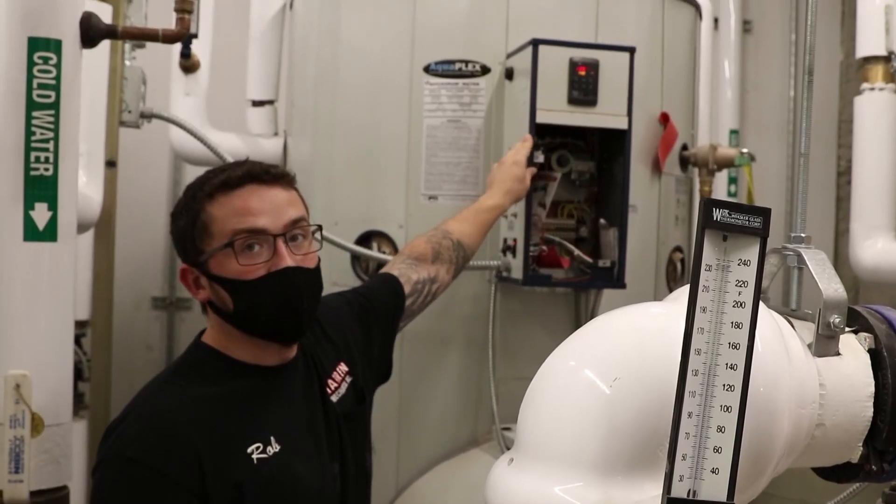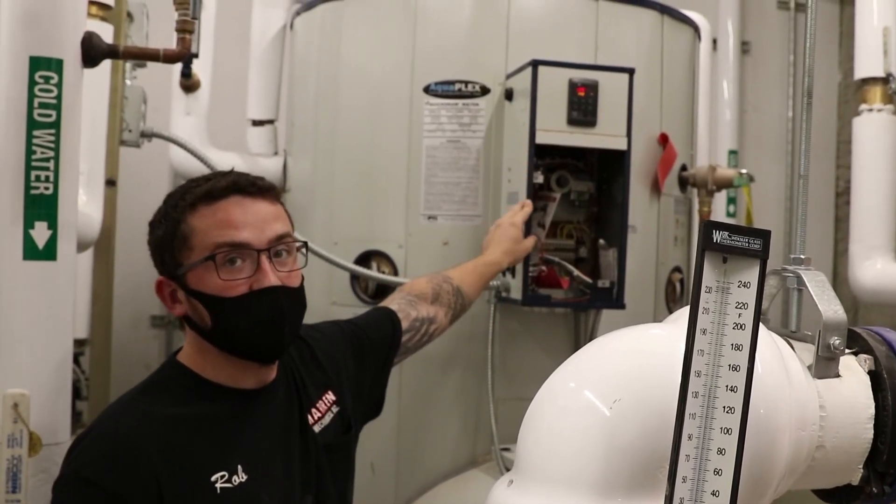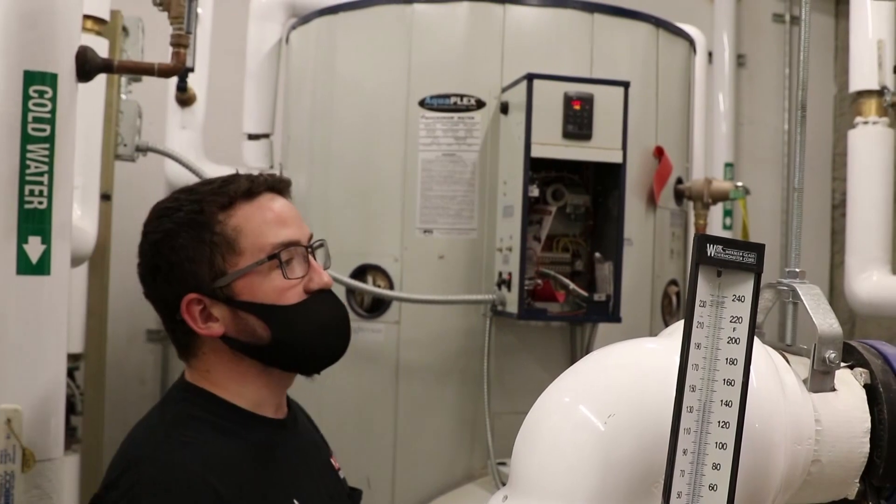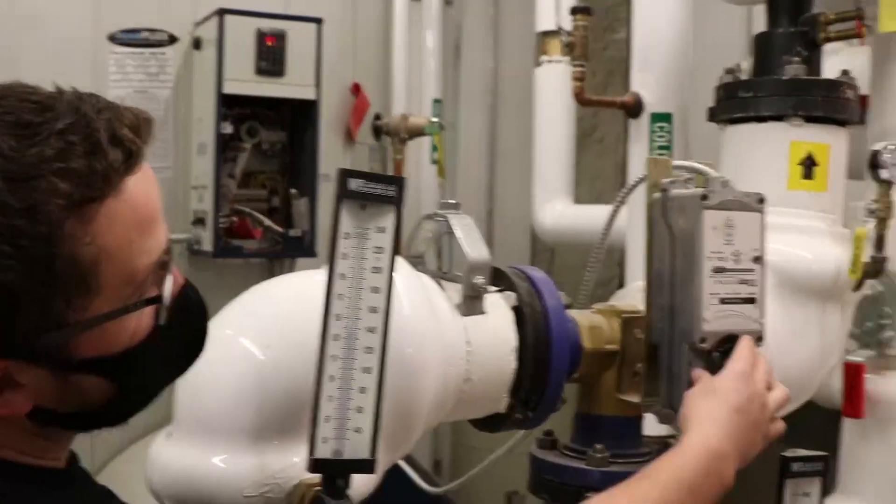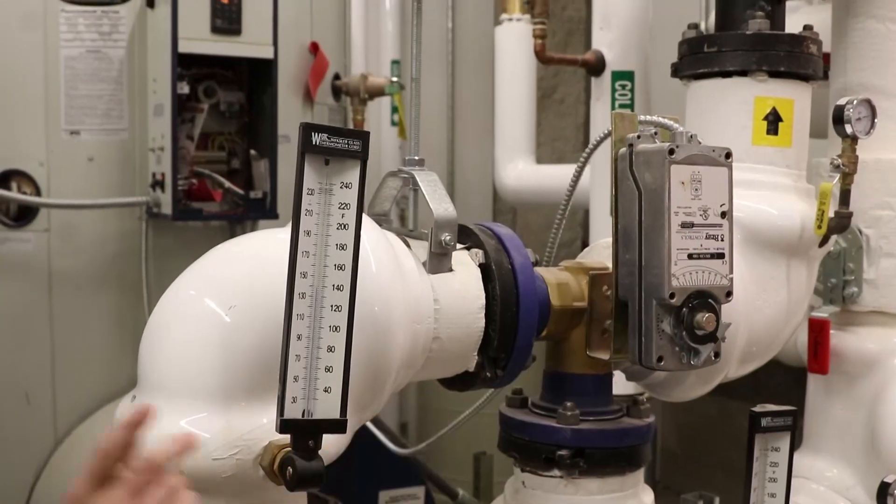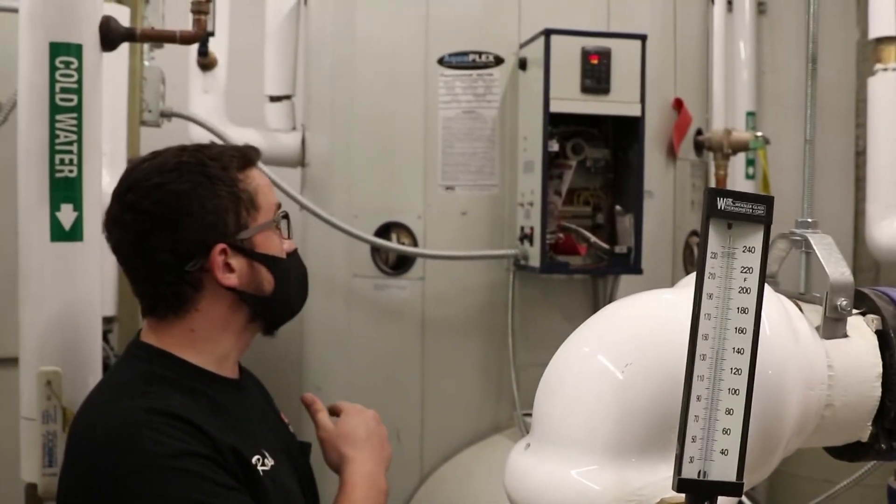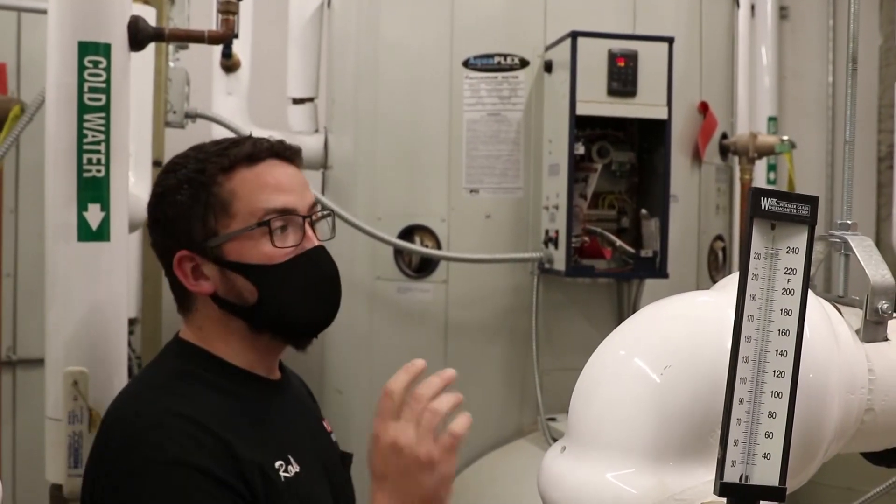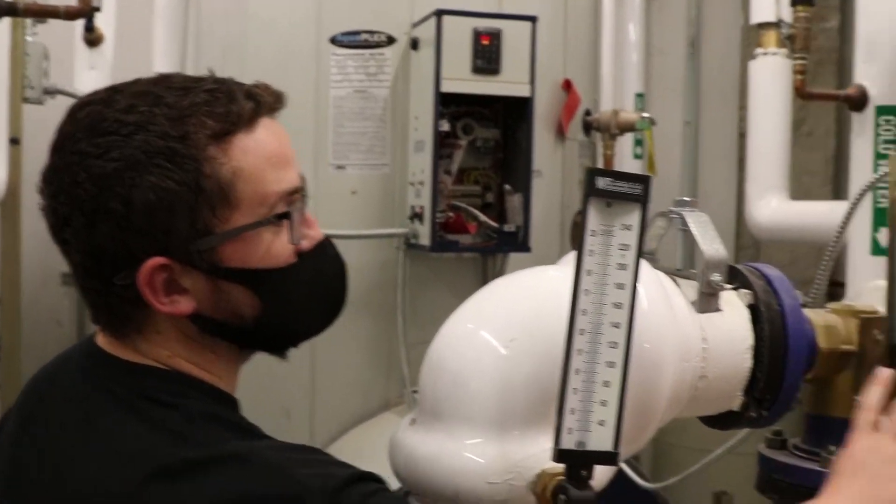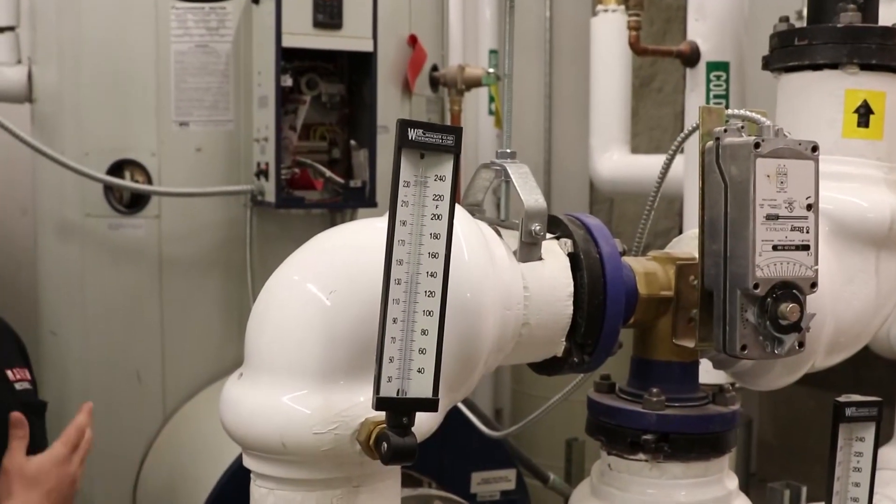When they drop to 135 degrees, a call for heat is initiated. When that happens, this three-way valve will open up to allow boiler water to flow through the heat exchanger. This will happen until the set point is met at 140, at which time this valve will close and it will not open again until there's another call for heat.